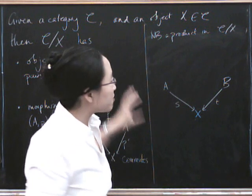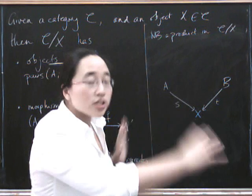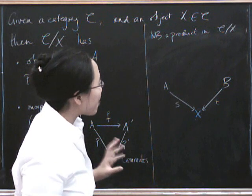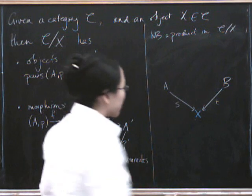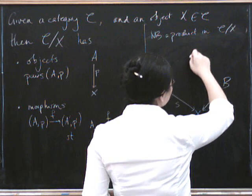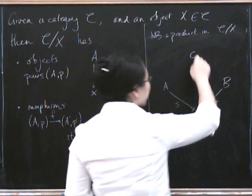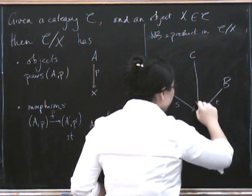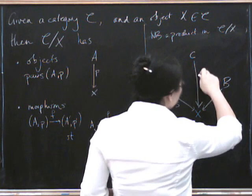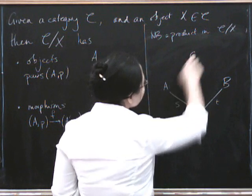Well, what's a product going to be? It's going to be an object of our category, of our slice category, together with projections down to the two objects we're taking a product of with some universal property. So let's start by writing up an object. So an object is going to be some object, let's call it C. And because it's an object in the slice category, it's got to come equipped with a morphism down to X, like this. So that's the object. Let's call that U.